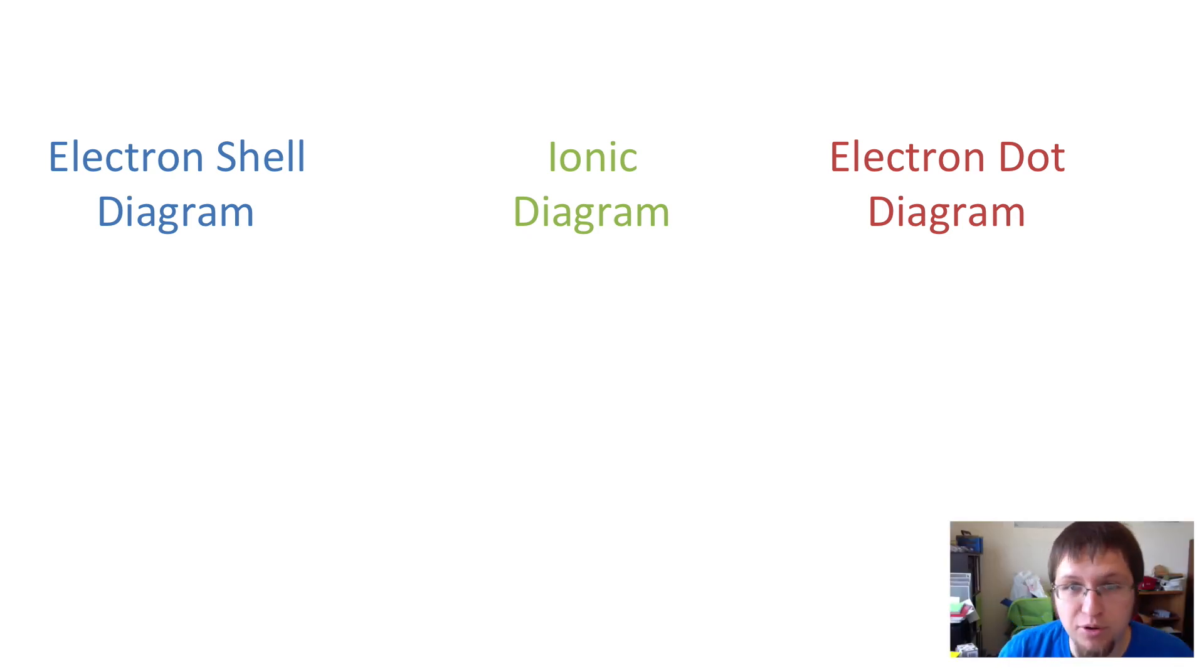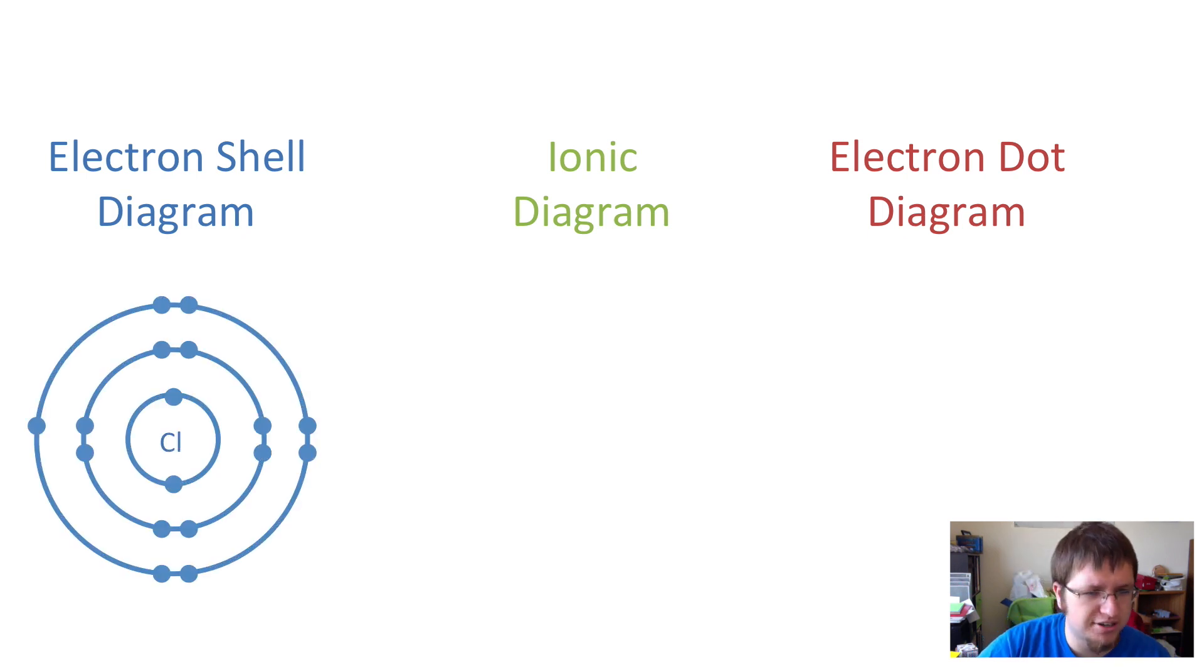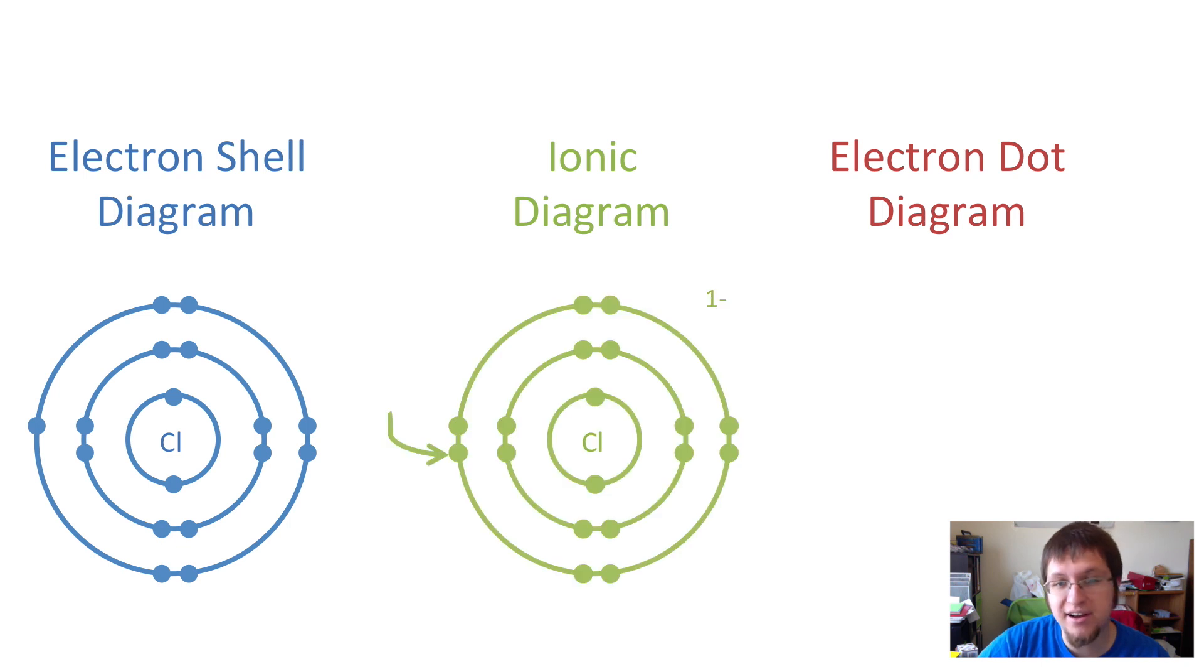Alright, so today we're going to learn about three different diagram methods for making a diagram of atoms. Keep in mind that a diagram is a simplified version of something. So what we have here is the electron shell diagram for chlorine, the ionic diagram for chlorine, and the electron dot diagram for chlorine. You'll notice each one of these is a little bit different, and they all have their own intended purposes.